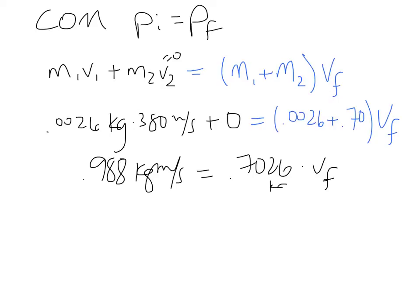So we divide by kilograms, cancel the kilograms out. So V_f, when we divide both sides, gives us 1.41 meters per second.